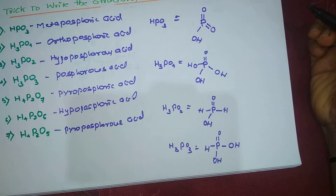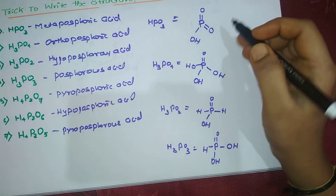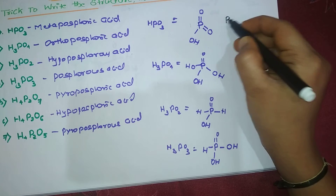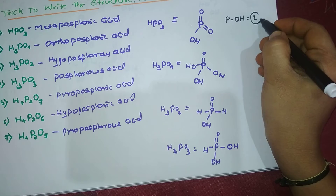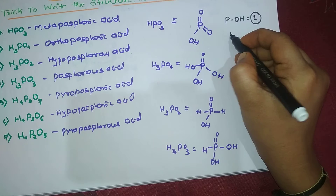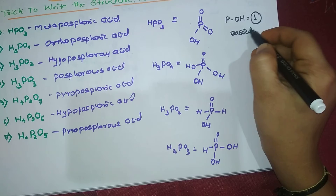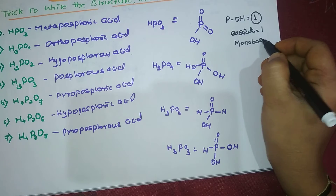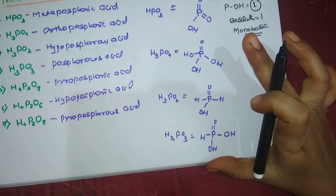The first compound is HPO₃, called metaphosphoric acid. Here we have only one P-OH bond, meaning there is only one replaceable proton. So the basicity of this compound is 1 - it is monobasic in nature.